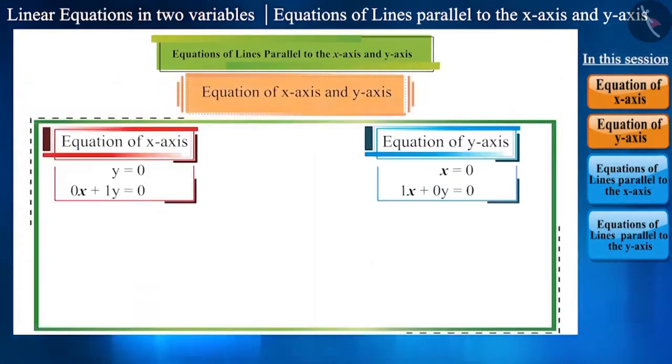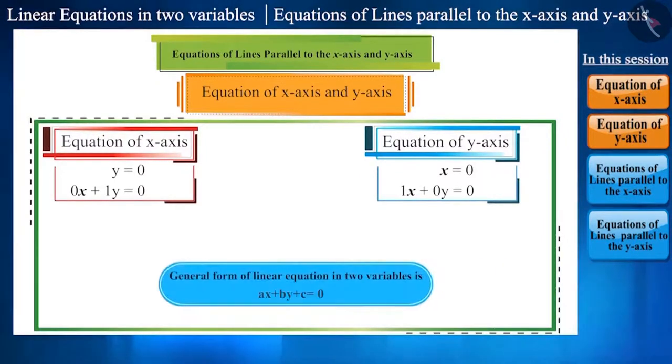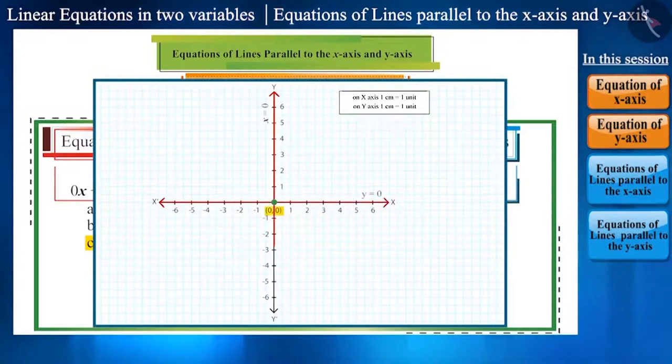We got two equations which represent two lines, the x-axis and the y-axis. Now, if we compare the two equations with the general form of linear equation in two variables, we get constant terms as 0. And, since the constant terms are 0 here, the two lines pass through the origin.